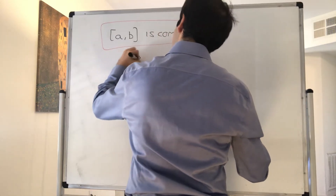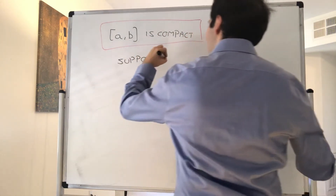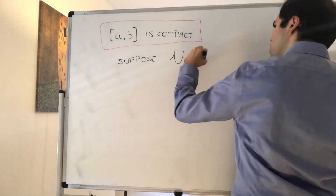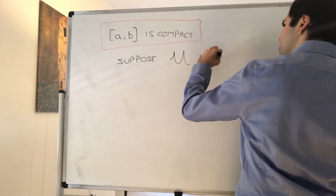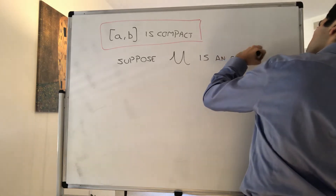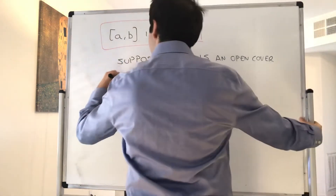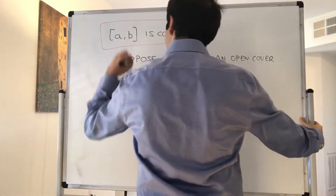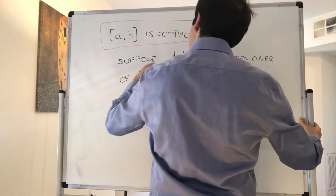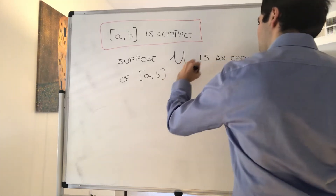By compact here I mean cover-compact. Suppose U is an open cover of the interval [a, b], and what we want to find is a finite subcover.